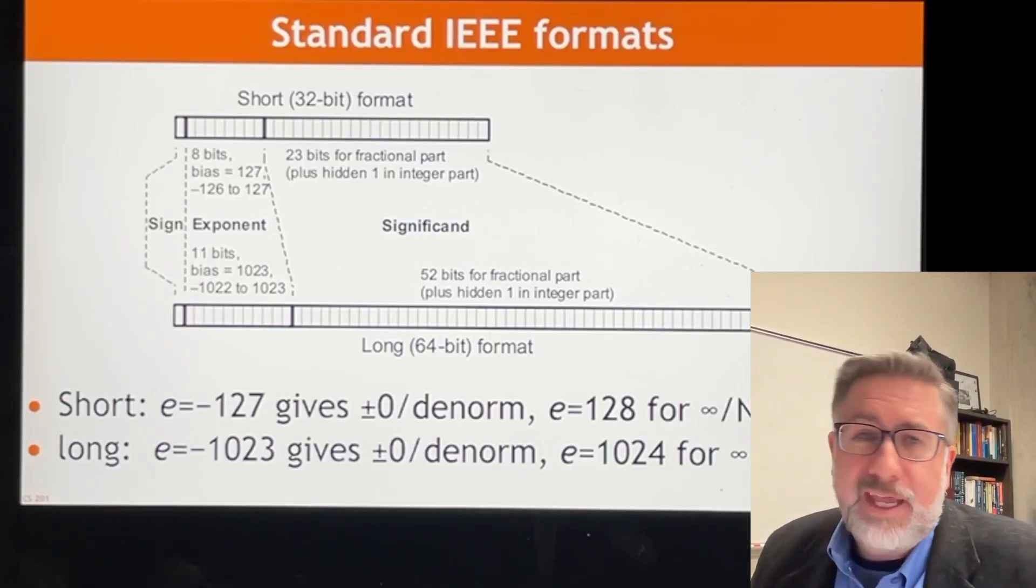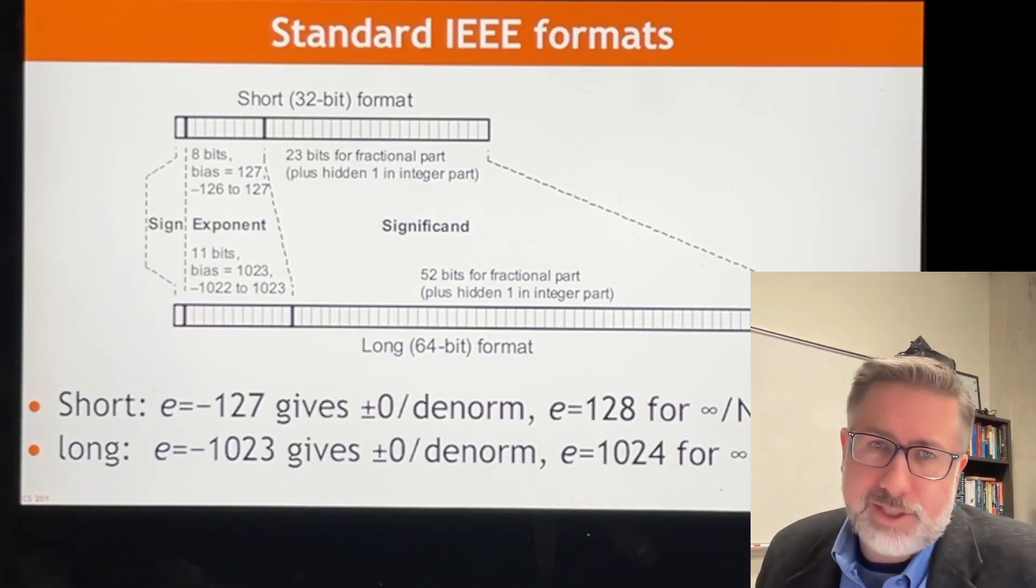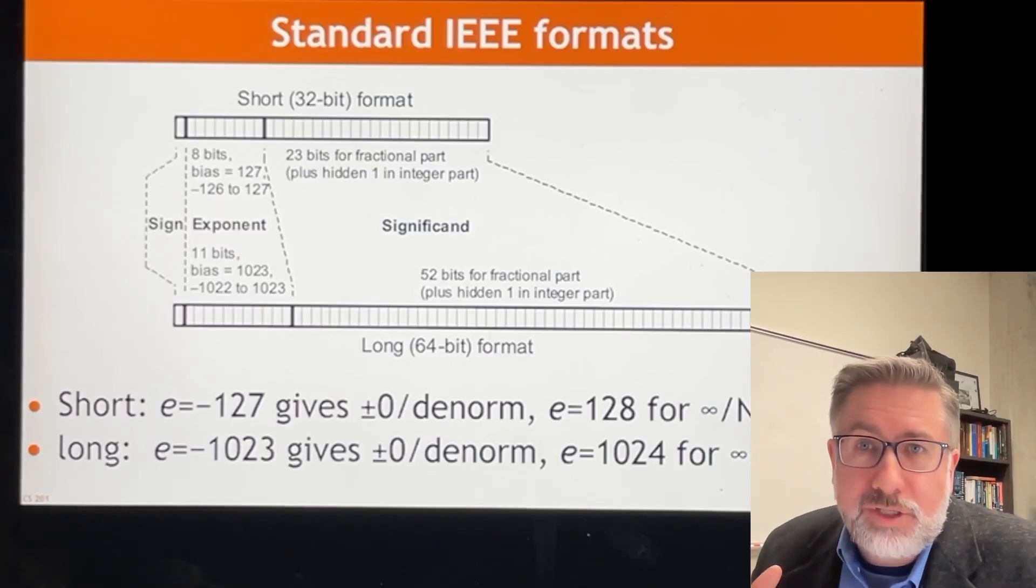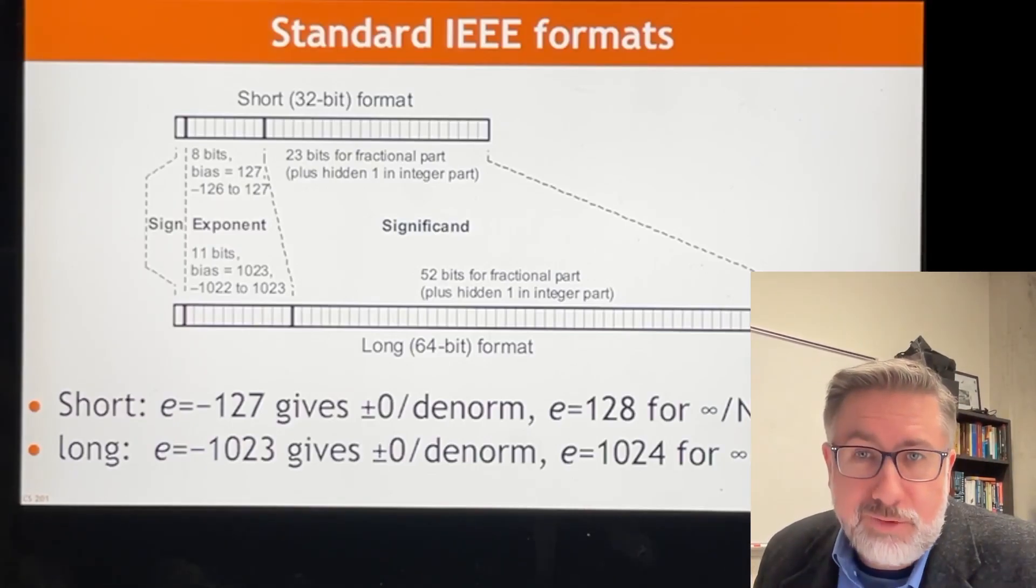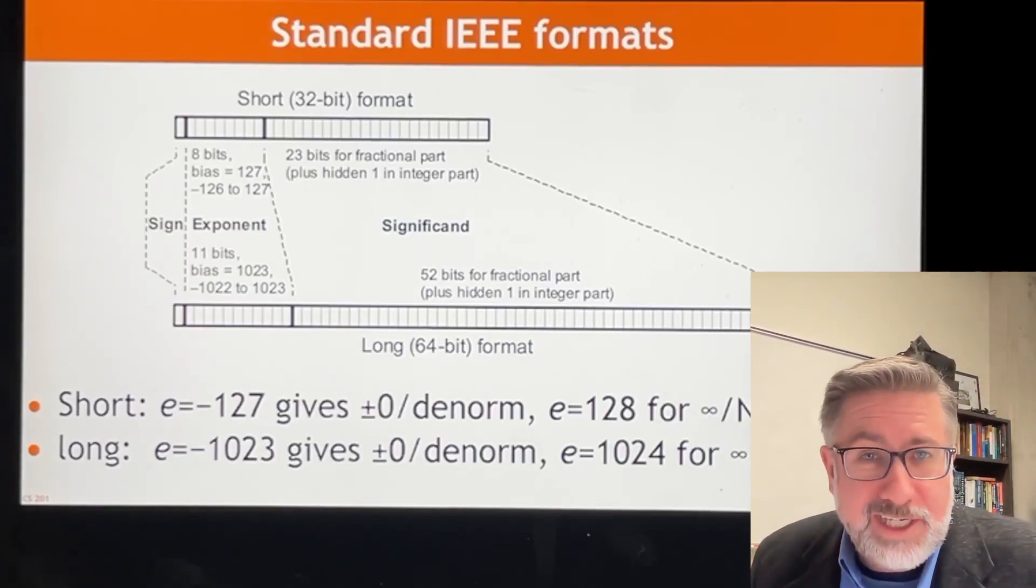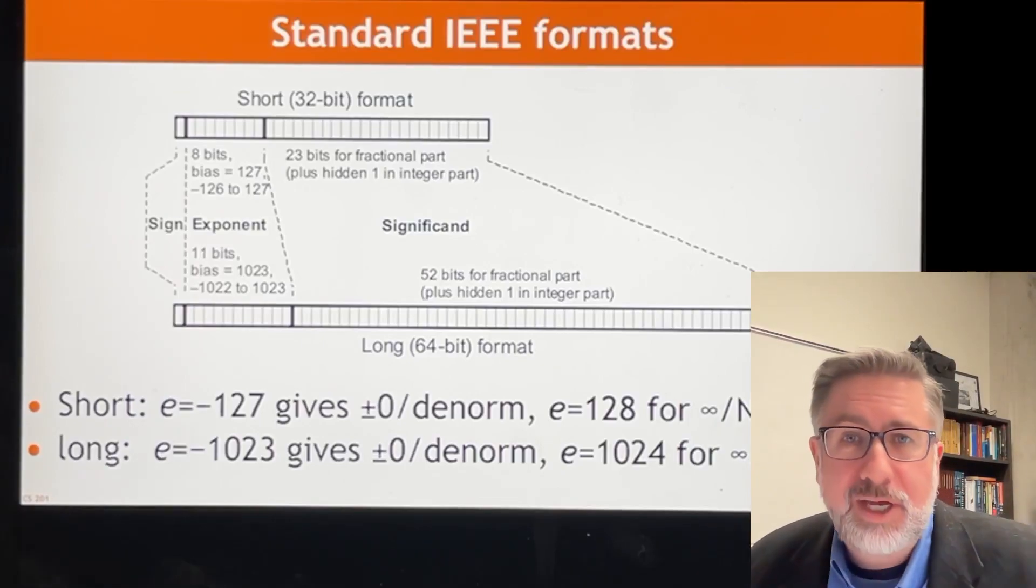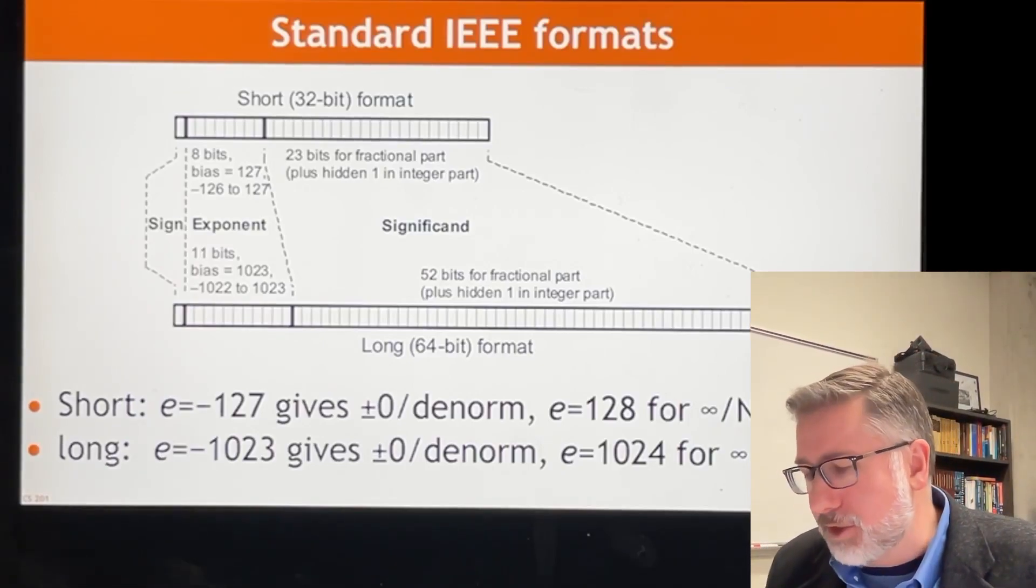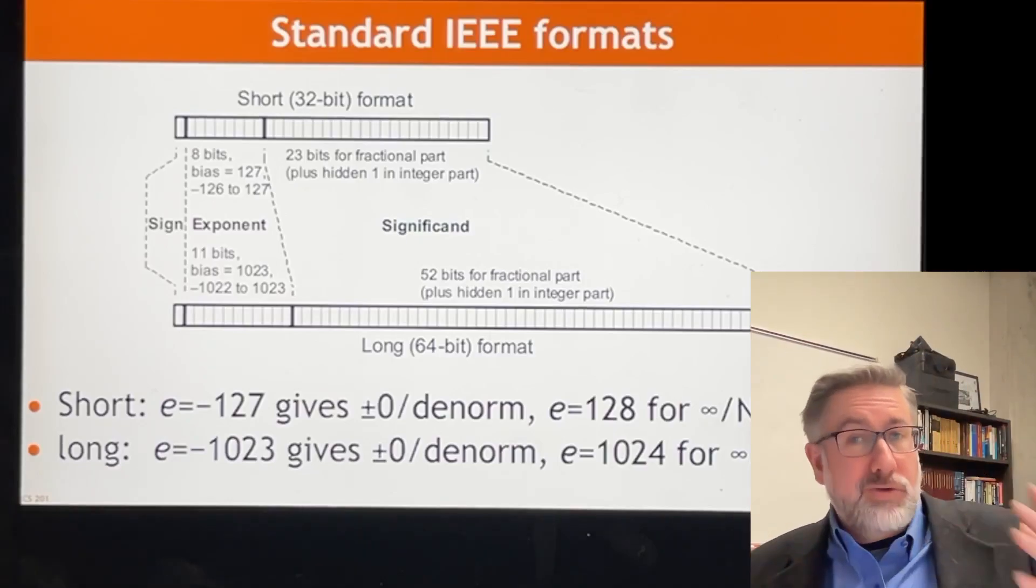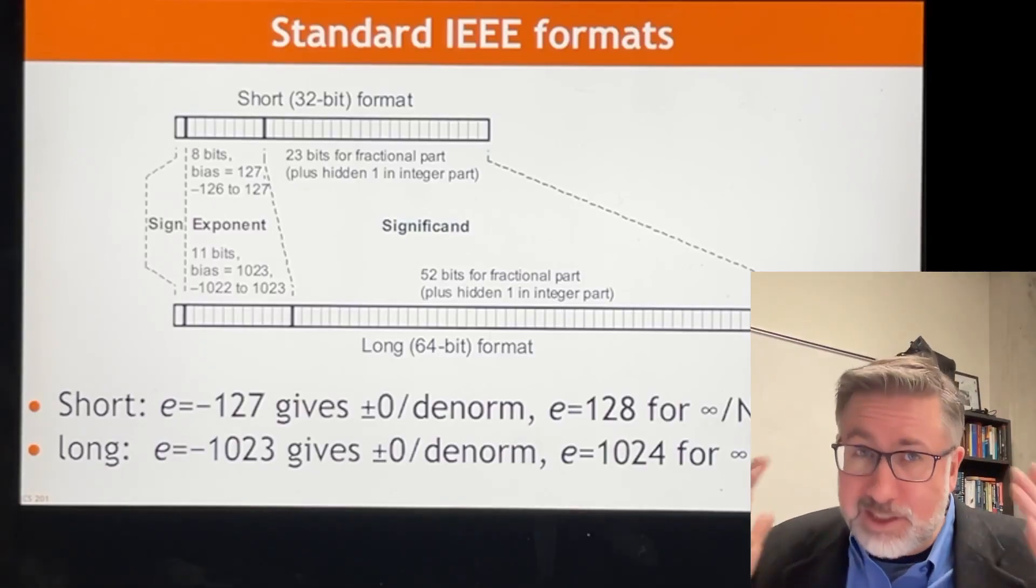The double precision one is 11 bits of exponent, which means 2 to the 1023, negative 1022 to the 1023, and then 52 bits plus the normalization bit. So 53 bits of information for the fractional part in the double precision. So that's great. Lots of information, lots of detail. We can represent almost any number that way.